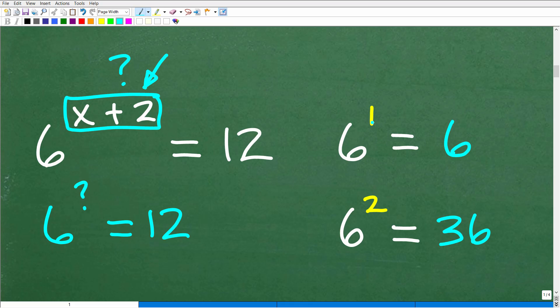Okay, so if we have 6 to the first power, that's 6. And 6 to the second power is 6 times 6. That's 36, right? So 6 to what power is going to give us 12? Well, you could see here, if we go from 6 squared, 6 to the second power, that's 36.